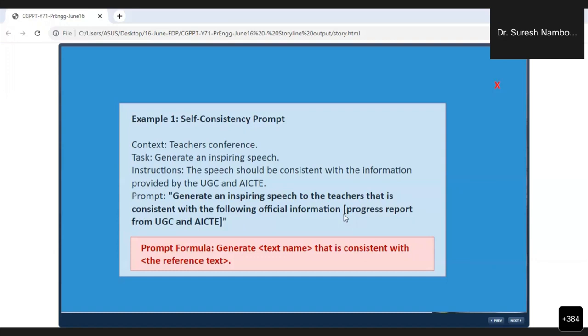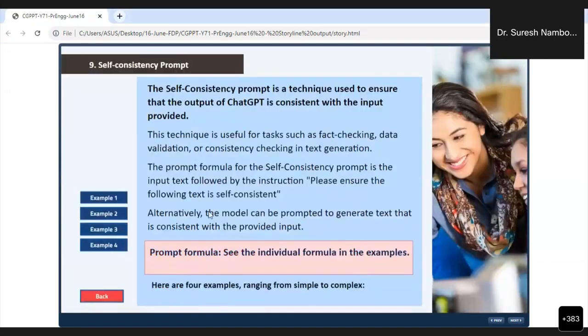ChatGPT will ensure that the inspiring speech will be consistent with the UGC and AICTE policies. Here, the prompt formula is: 'Generate [text name, e.g., inspiring speech] that is consistent with [reference text]'—that is, the UGC or AICTE policy document. Now you understand the power of this.